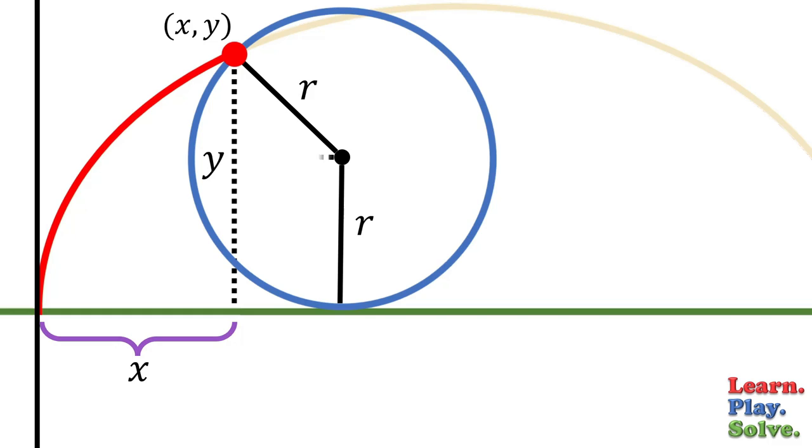If we make a right triangle here and let the base of the triangle be a, then this line segment must also be a. Therefore, we can call the total distance the circle has rolled x plus a.